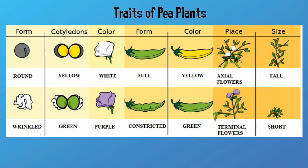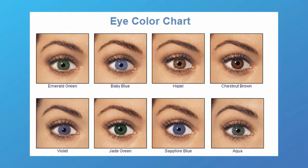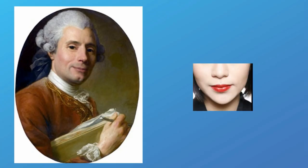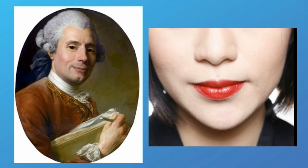Look at this picture of eye color. The trait is eye color and the alleles are the different colors.